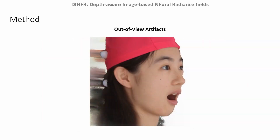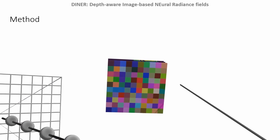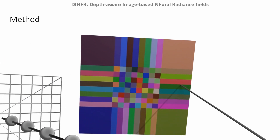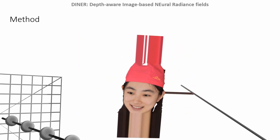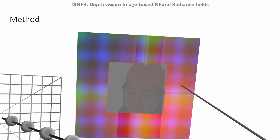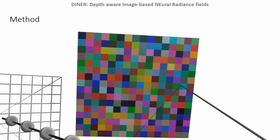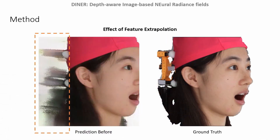We notice that artifacts occur in regions that are not visible in the source images. For these regions, the sample points project outside of the source feature maps. Previous methods apply border padding in this case, which results in constant values irrespective of the distance to the camera plane. To solve this, we propose adding border padding to the source images prior to the feature encoding. We also use positional encoding in the padded regions as additional input. The resulting feature maps span a wider range than before and provide distinctive features even for samples that do not fall onto the camera plane. As a result, the observed artifacts are effectively reduced.